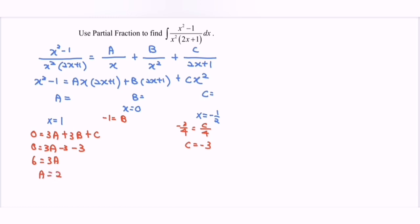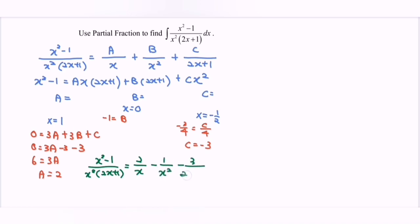So for this case we may express our answer: x squared minus 1 over x squared multiplied with 2x plus 1 equals 2 over x minus 1 over x squared minus 3 over 2x plus 1. That is the partial fraction. Next, let's integrate x squared minus 1 over x squared multiplied with 2x plus 1 with respect to x.